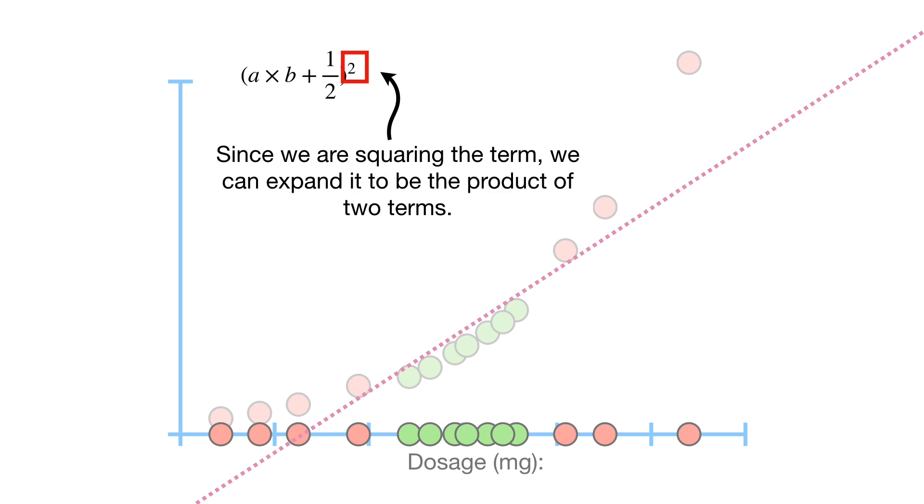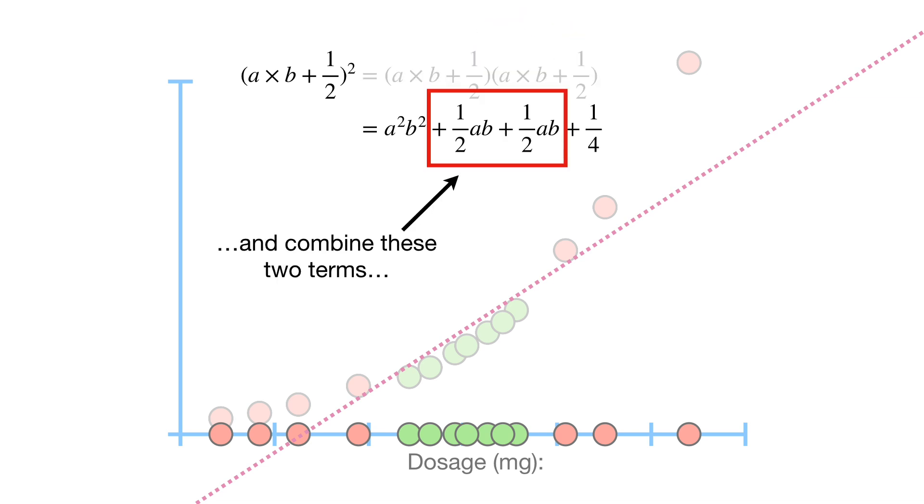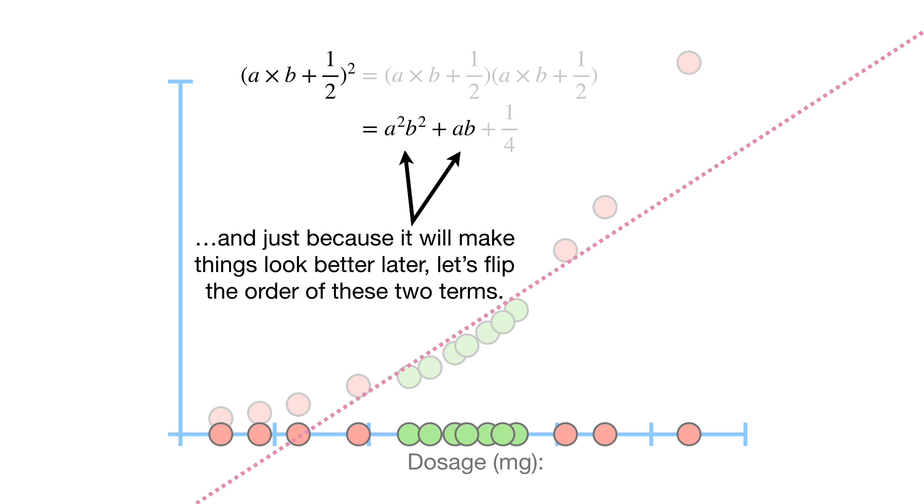Since we are squaring the term, we can expand it to be the product of two terms. Now we just do the multiplication, and combine these two terms, and just because it will make things look better later, let's flip the order of these two terms.